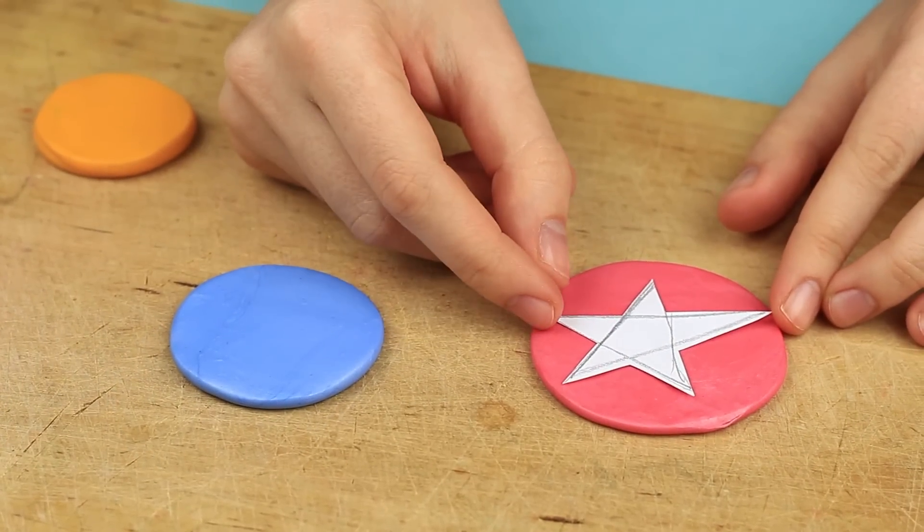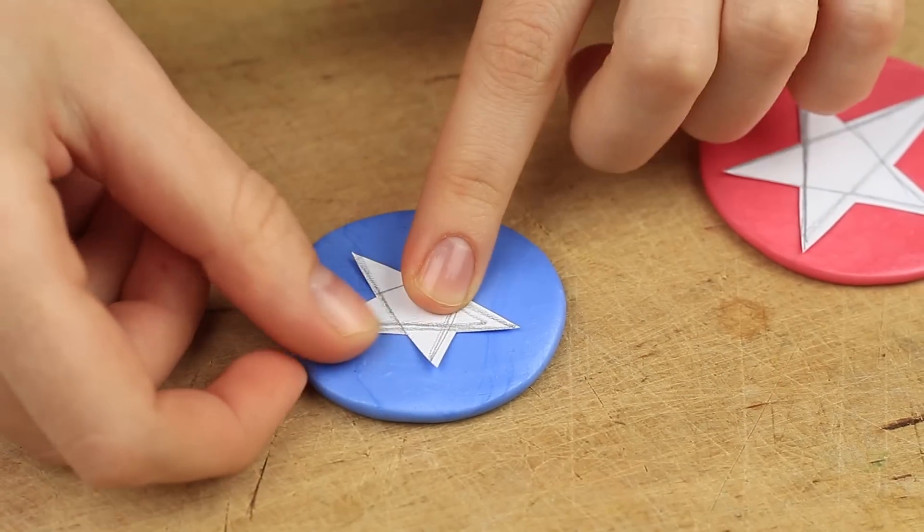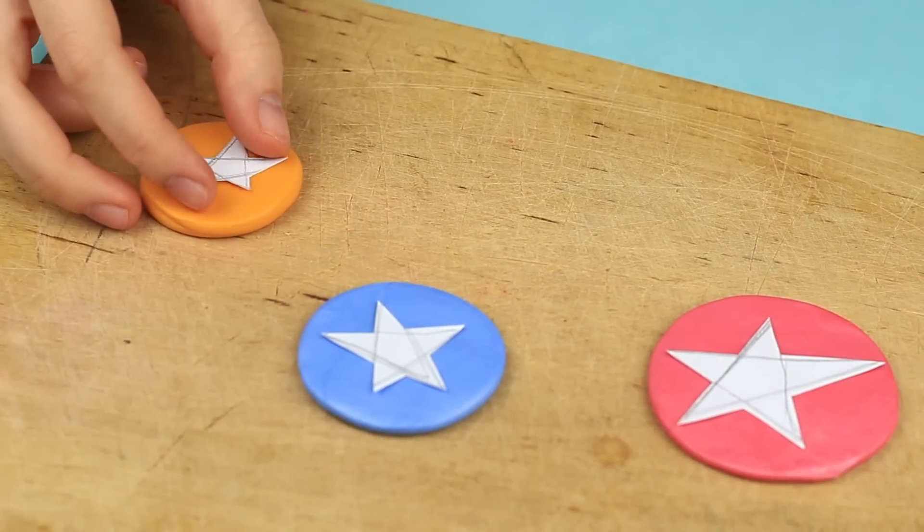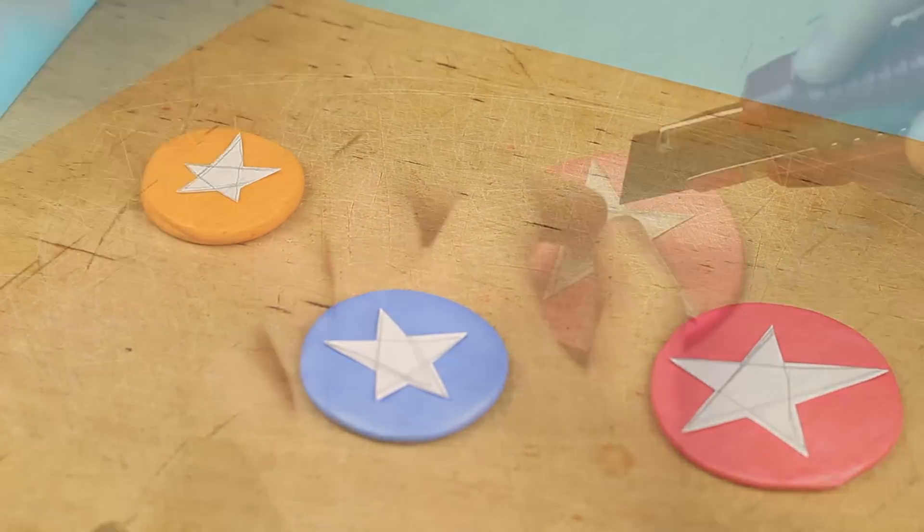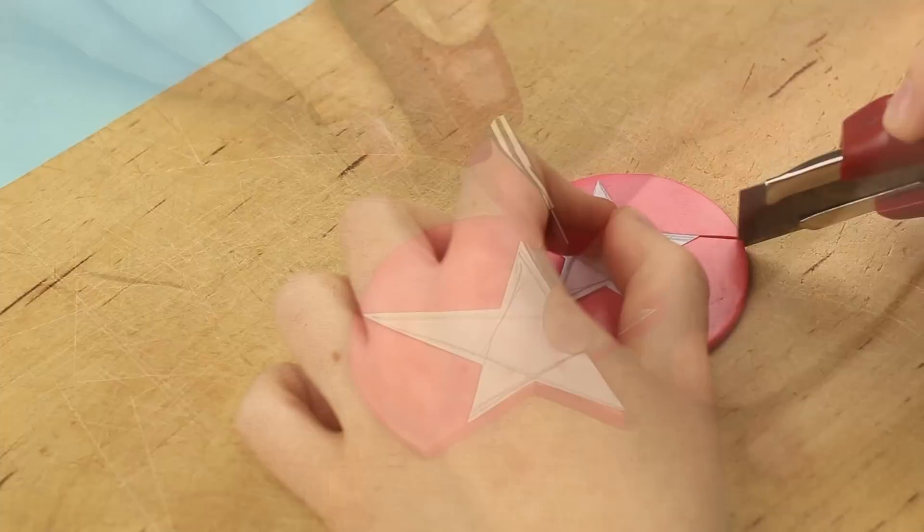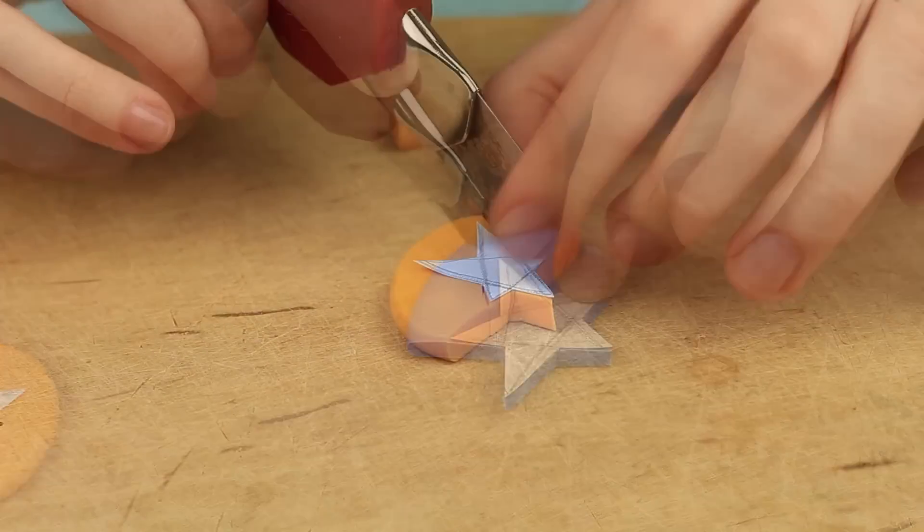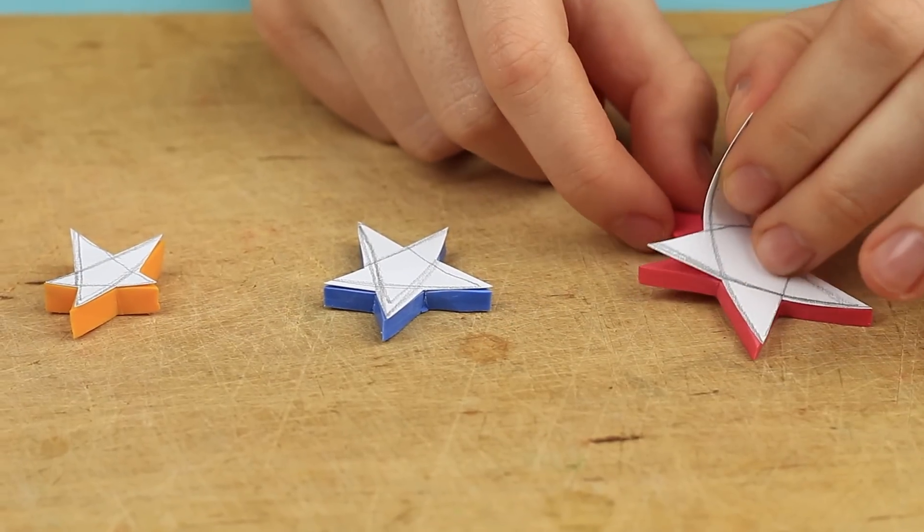Put the templates onto the clay circles. Press over and smooth with your fingers. As we'll use a craft knife, be careful to lay a wooden board. Cut out carefully. Don't let the templates shift. Remove the paper.